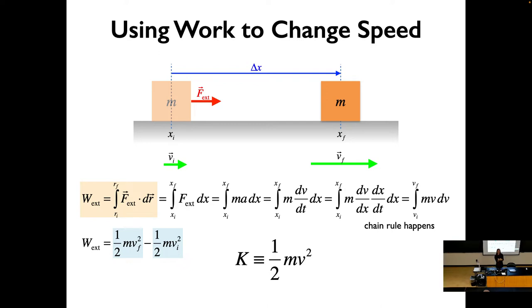Conservation of energy says that as long as no energy enters or leaves the system, the total energy should be the same. The energy comes from me applying an external force. So say I give it three joules of energy — at that point it has three joules of kinetic energy described by one half mv². As it slows down going up, the kinetic energy decreases until it's zero at the top; that kinetic energy is being transferred into potential energy — stored positional energy. Same thing with springs.